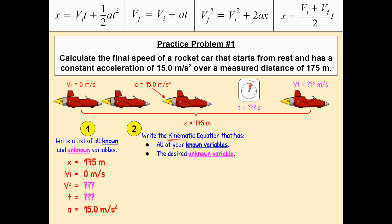So which of these four equations up above matches our requirements? Well, what are our known variables? We have x, Vi, and a. So x, Vi, and a. So it seems like it's going to be one of these two.